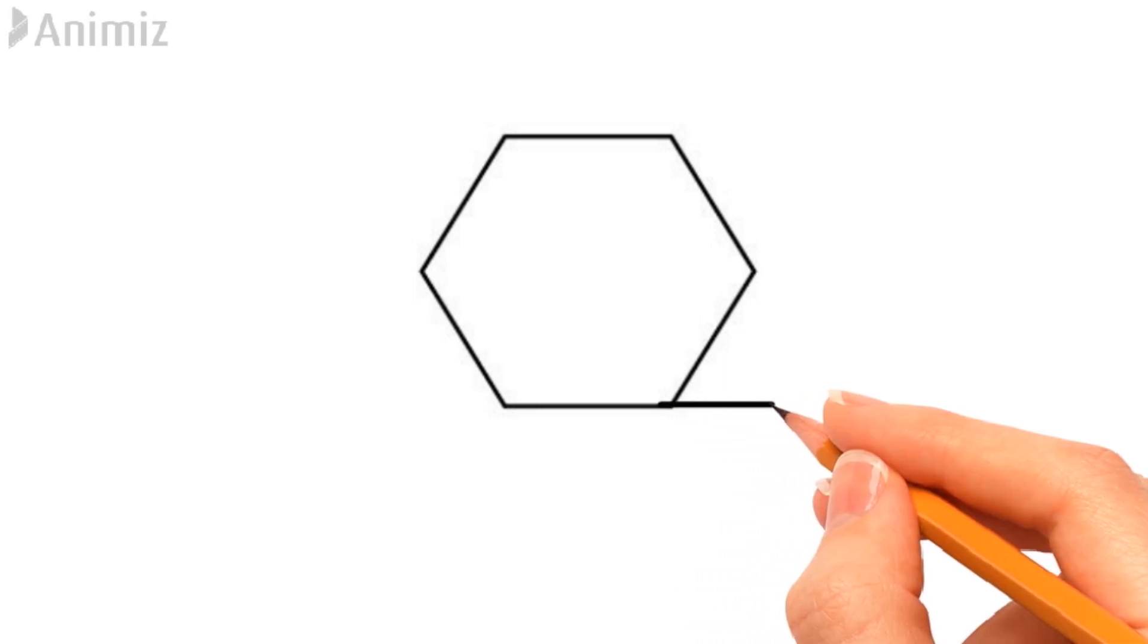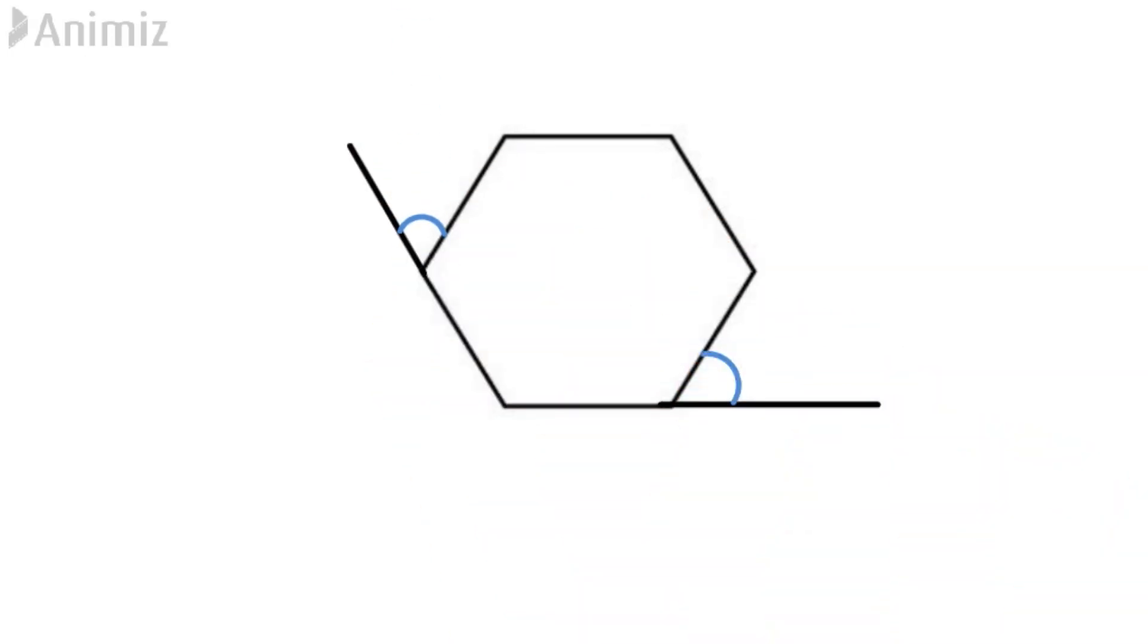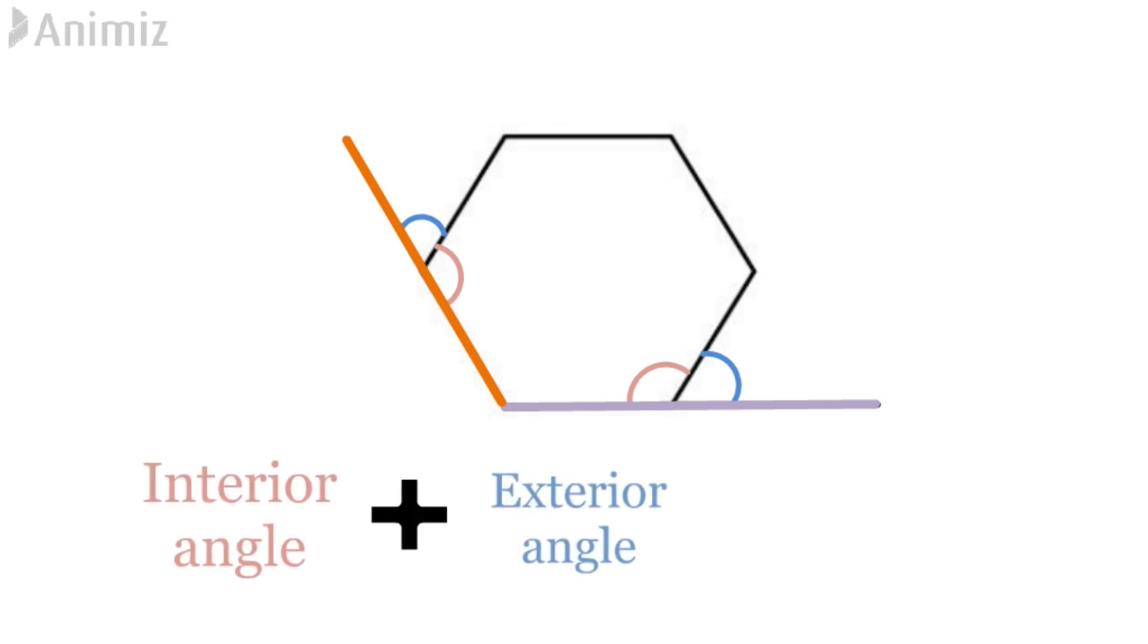Next, we'll study about the relation between the interior angles and exterior angles of a polygon. If we extend the side of a polygon, we get its exterior angle, as you can observe over here. It can be seen that the interior angle and exterior angle of the polygon form a straight line. And hence, the sum of its interior angle and exterior angle is equal to 180 degree.